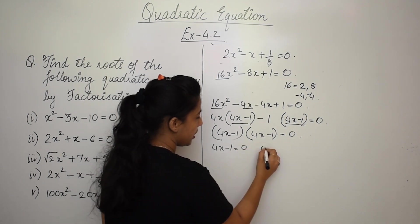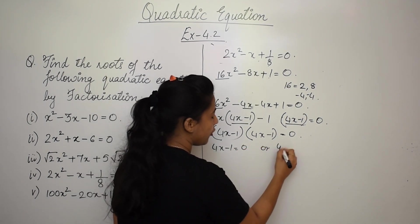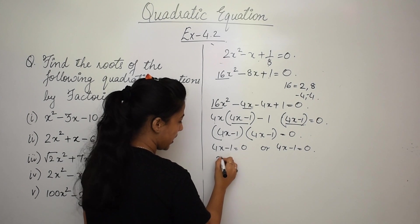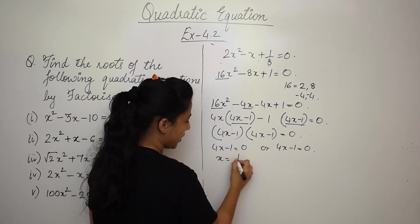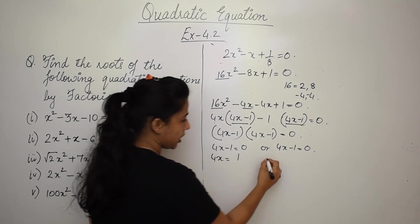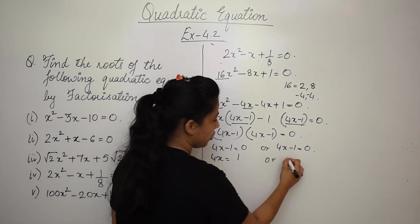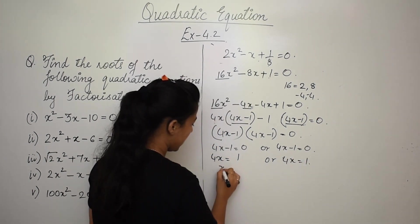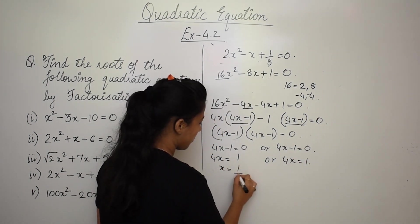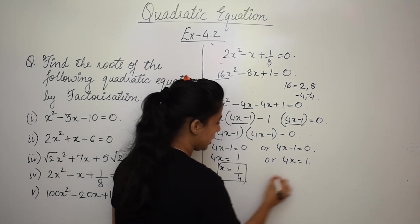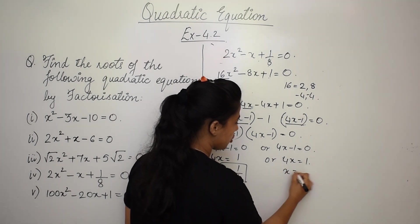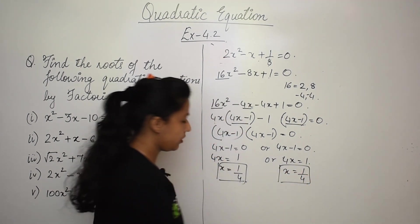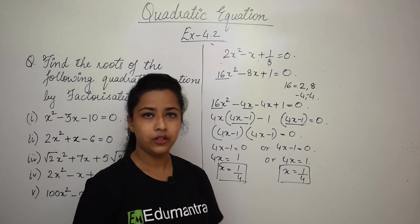Since both factors are the same, 4x - 1 = 0 in both cases. So 4x = 1, giving x = 1/4. The value of x is 1/4.